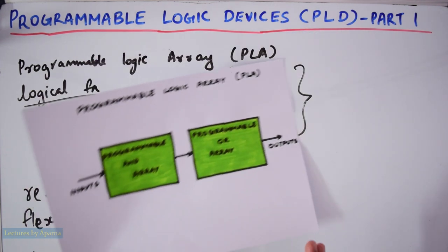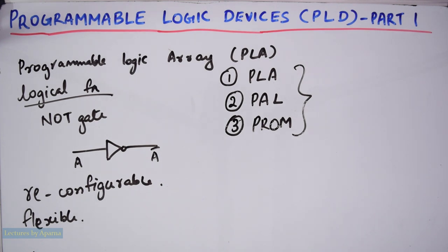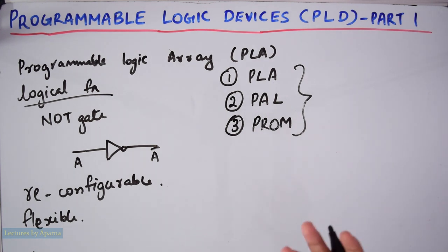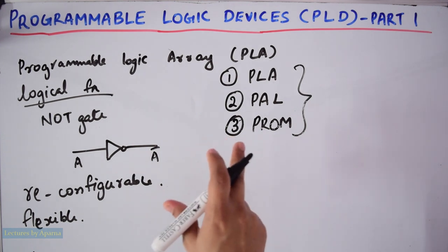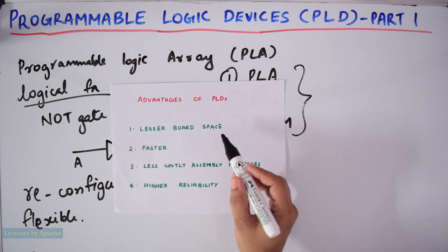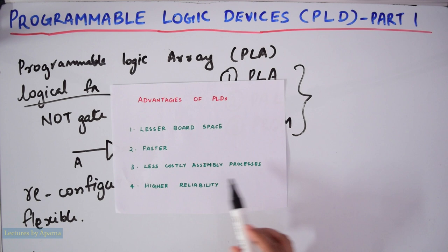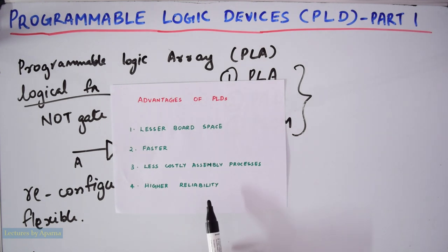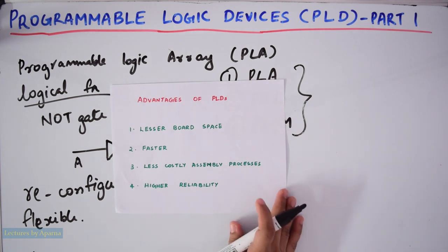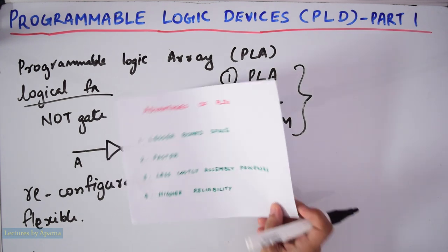Now what is the advantage of using PLDs? The problem of using ICs which contain separate logic gates like NAND gate IC, NOR gate IC etc., is that in the logic design when we place them they require lots of circuit board space. Also they need a great deal of time and cost in inserting, soldering and testing them. But if you use PLDs, they take lesser board space, they are faster, they have less costly assembly processes, and higher reliability, because only fewer ICs are needed. This makes circuit connections and troubleshooting easier.